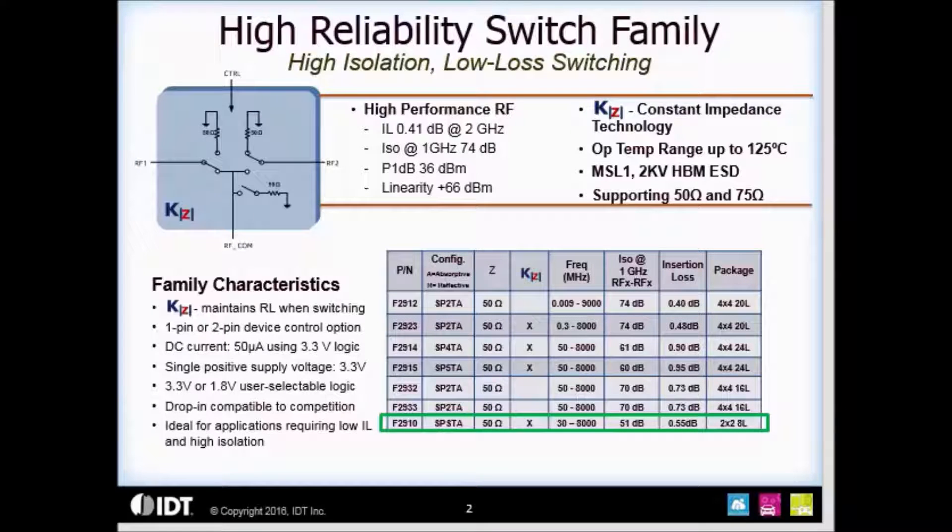The F2910 single-pull, single-throw switch is the newest addition to our growing RF switch portfolio. The device has an operating frequency range of 30 to 8,000 megahertz and has excellent RF performance. This device incorporates our new constant impedance feature, which I'll talk about later.